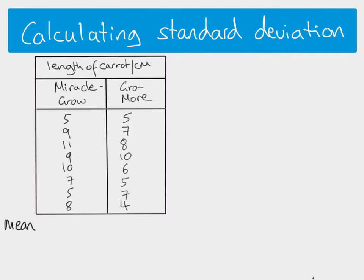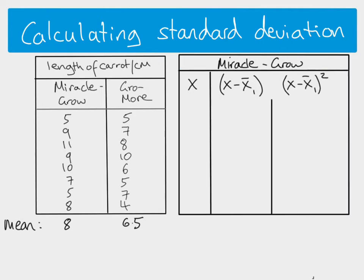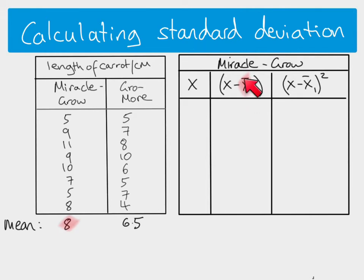She wants to calculate the standard deviation so she can see the spread of her data from the mean. Let's put all the data out there — you can see the means we've calculated. We're going to run through the calculations for Miracle Grow only so you can see how it works. You do not need to remember the equations for calculating standard deviation; you just need to know how to use them. The mean for Miracle Grow is eight, represented by X-bar — X-bar one, referring to this first data set.